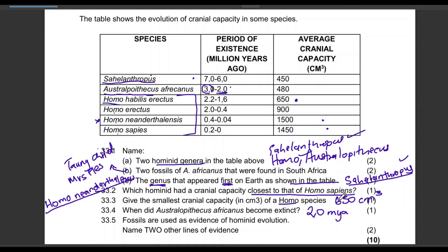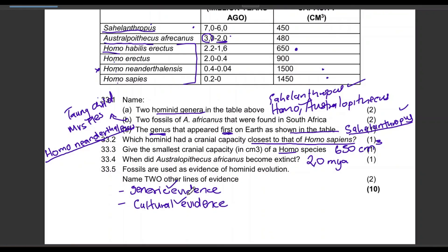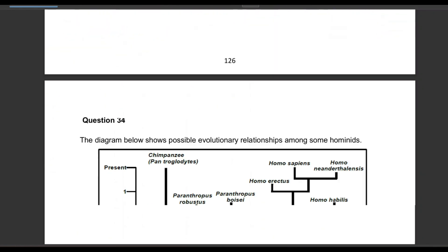Fossils are used as evidence of hominid evolution — name two other lines of evidence. The answer is genetic evidence and cultural evidence.